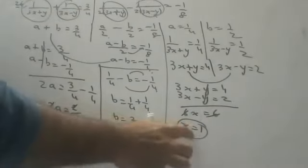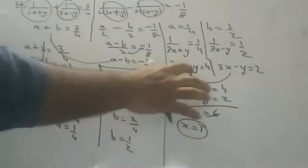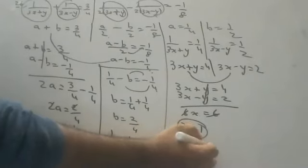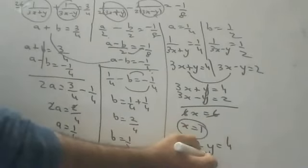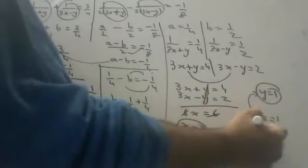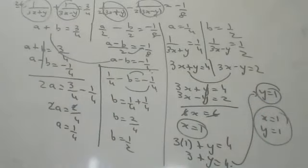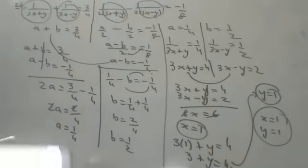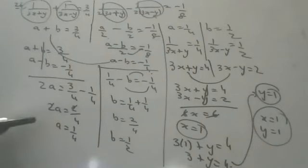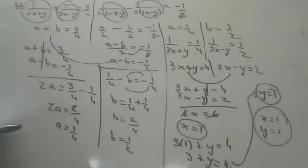Substituting x = 1 into 3x + y = 4: 3(1) + y = 4, so y = 1. Answer: x = 1, y = 1. I covered 4 sums today — 17, 18, 19, and 26. The remaining sums and the 38 sums on the next page are of the same type; please attempt them. First and third pages were discussed yesterday, second page today. Check the description link and let me know if you have any doubts.